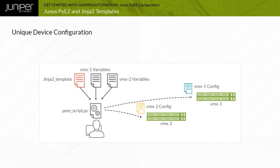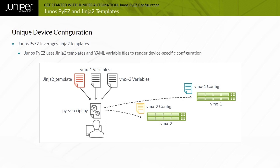Many Junos device configuration options, such as IP addresses, autonomous system (AS) numbers, routing neighbors, and so on, require unique, device-specific configuration values. Junos PyEasy leverages Python Jinja2 templates and device-specific YAML variable definition files to configure Junos devices with unique values.